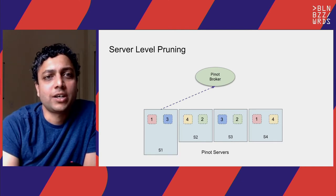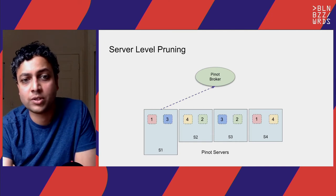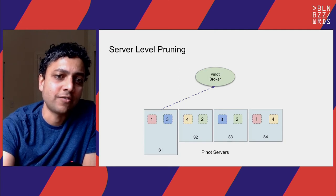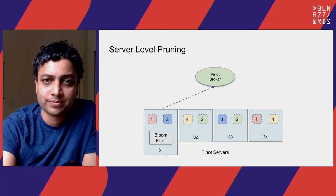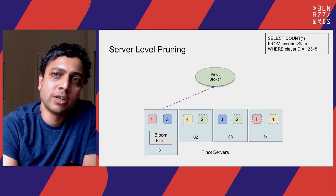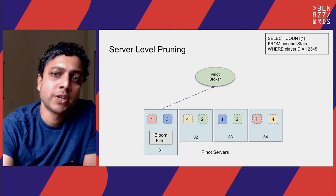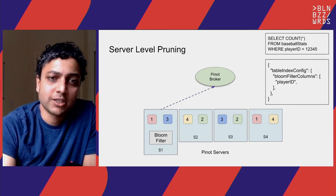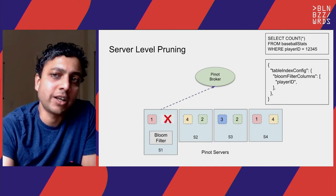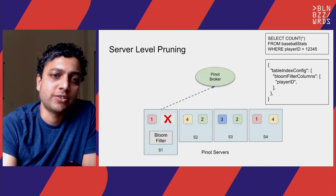At the server level, Pinot supports a bloom filter for further pruning. For example, if doing a query filtering on player ID, you can define a bloom filter on player ID. When the query comes in, the server uses this bloom filter to discard segments that don't contain that particular value, further reducing the amount of work the server needs to do.